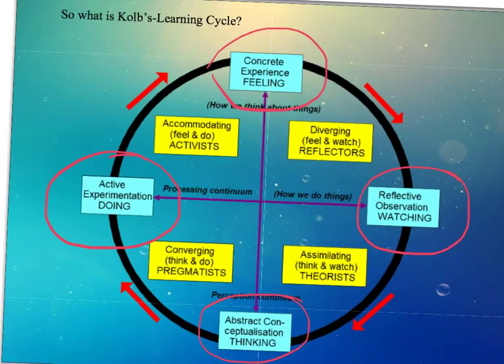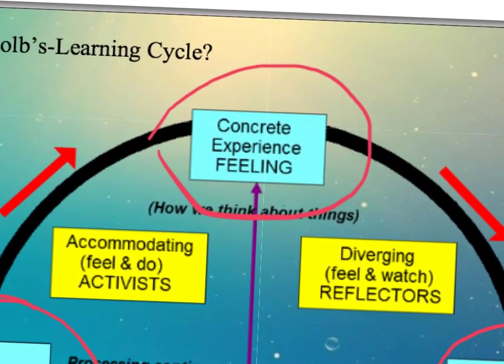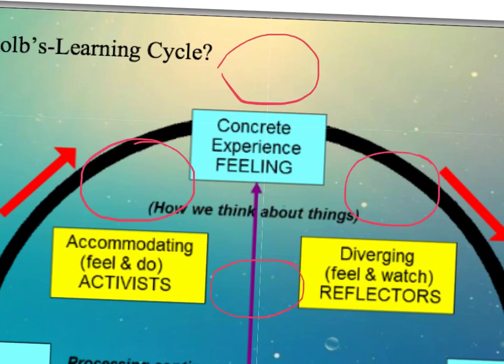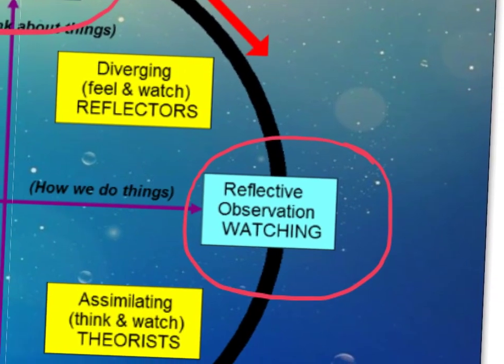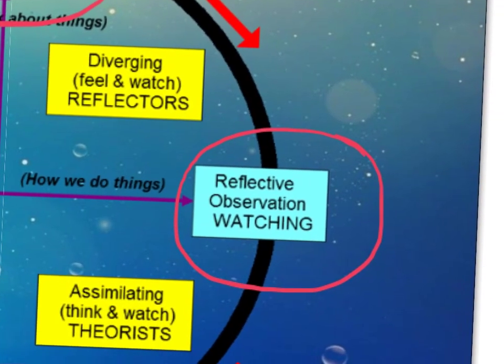The first point is concrete experience, which is about experiencing or immersing yourself in a task. This is normally the first stage where a person simply carries out their task. Next is observation, which is a reflection — stepping back from the task and viewing it from a distance. Your values, attitude, and beliefs can influence what you think at this stage. This is the stage of thinking.